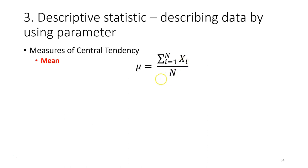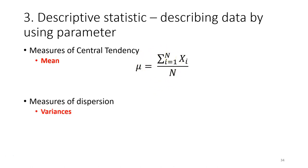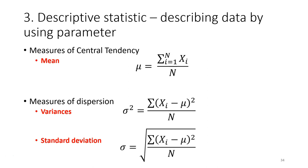To calculate the mean, there is a formula, but you just need to understand the concept and you should be able to calculate it without memorizing the formula. For the measure of dispersion, in this course we will focus on variance and standard deviation. Standard deviation is simply the square root of the variance.